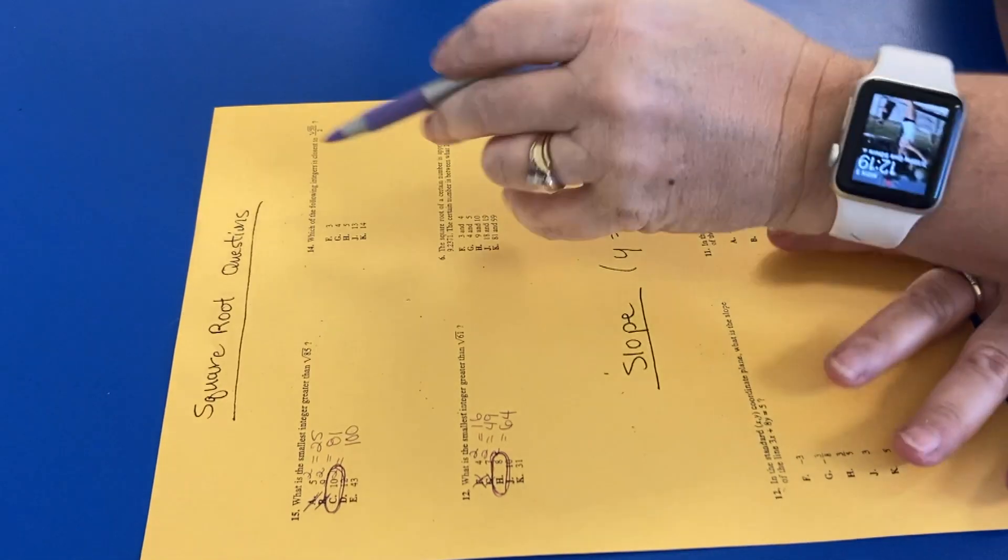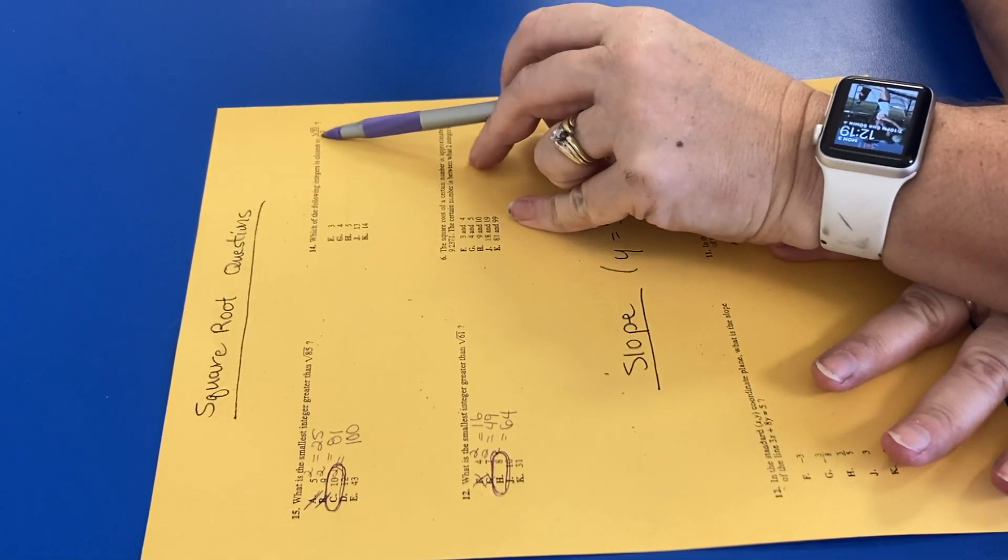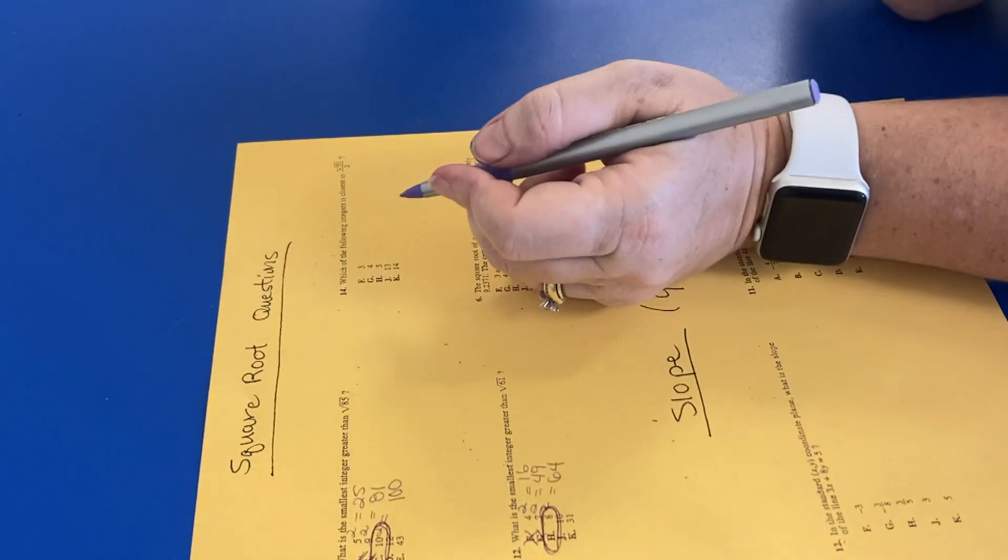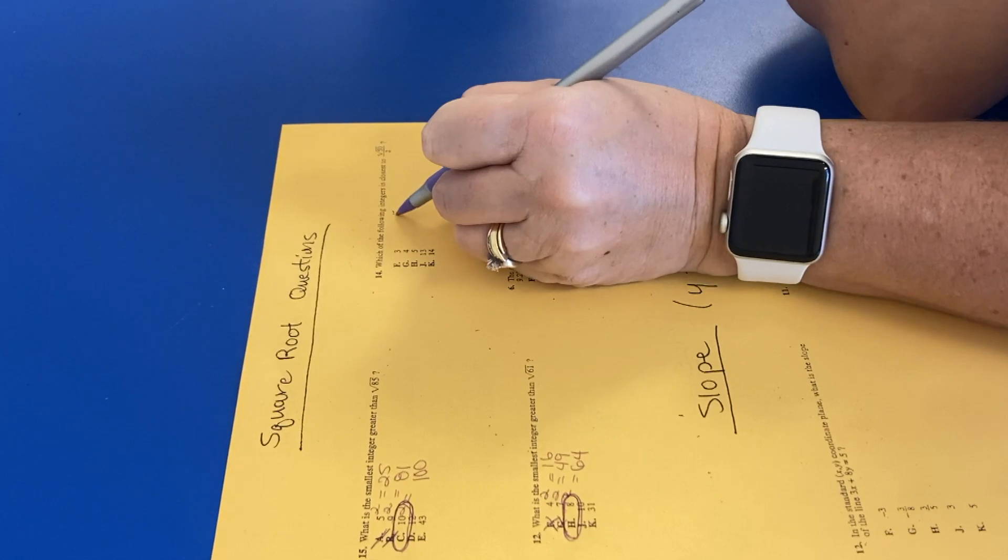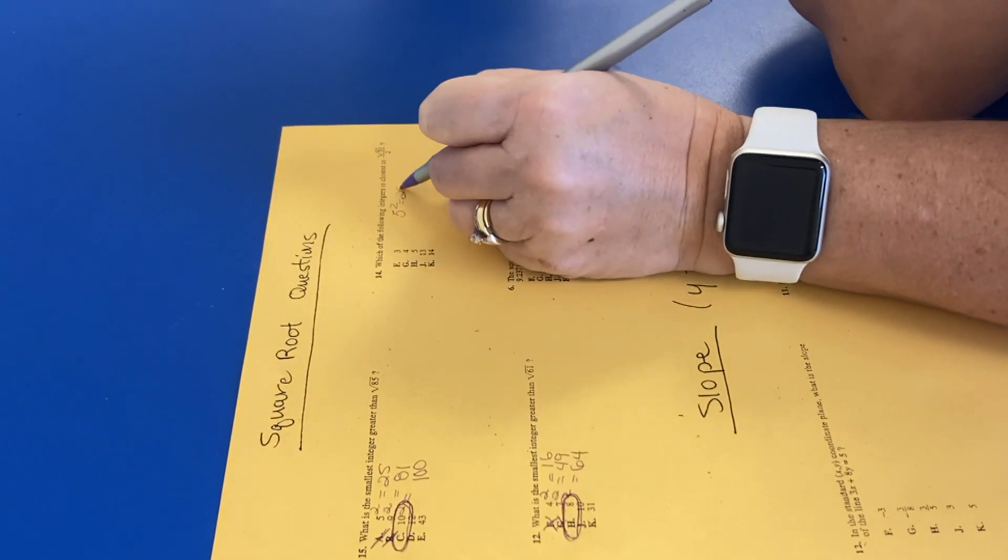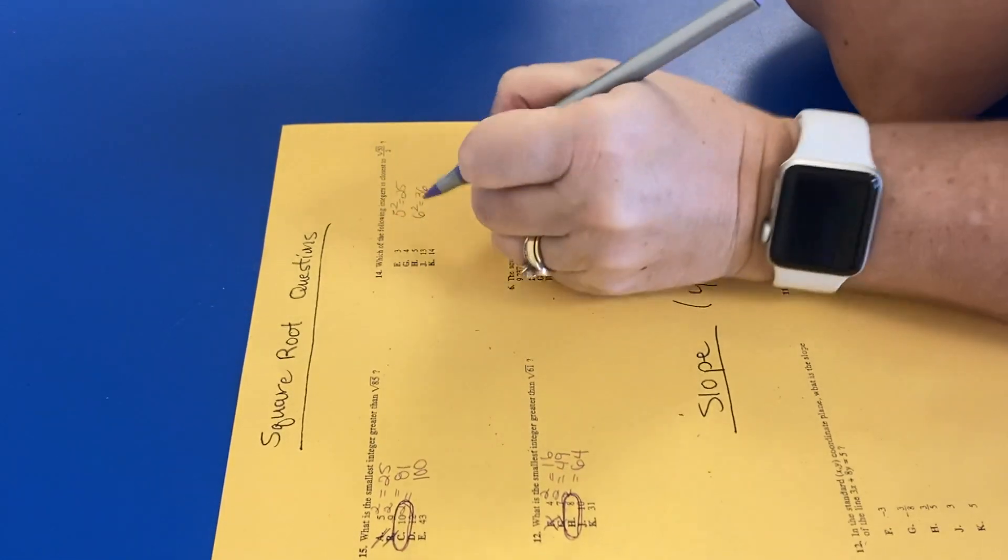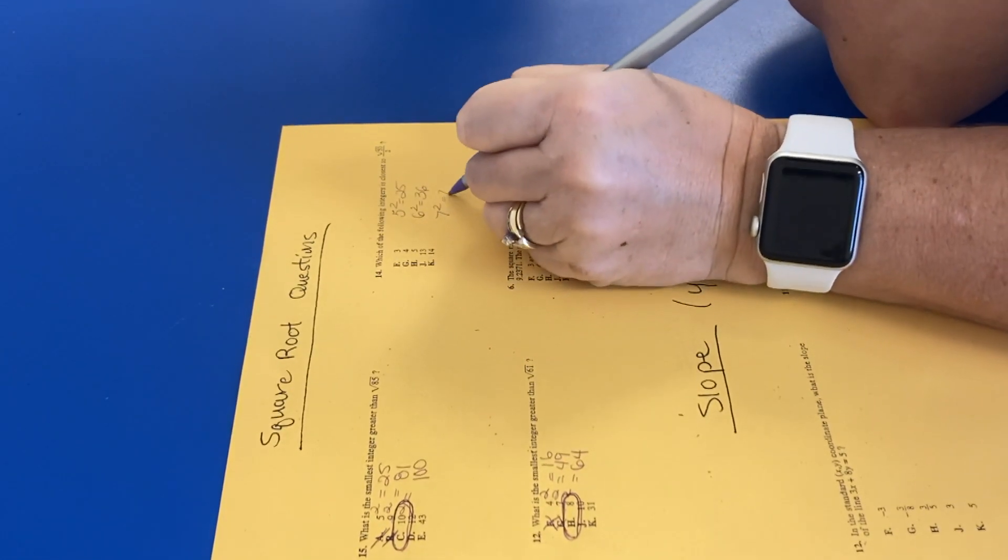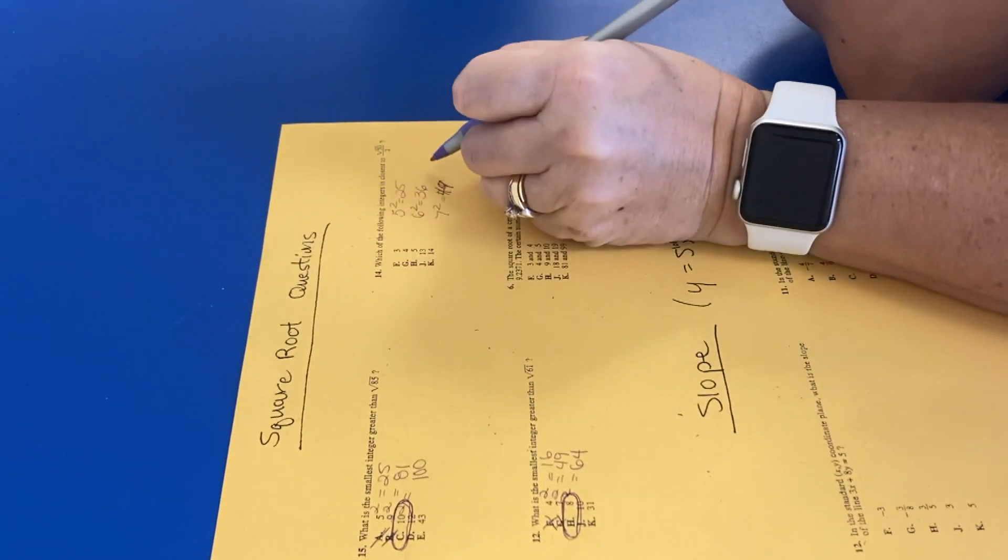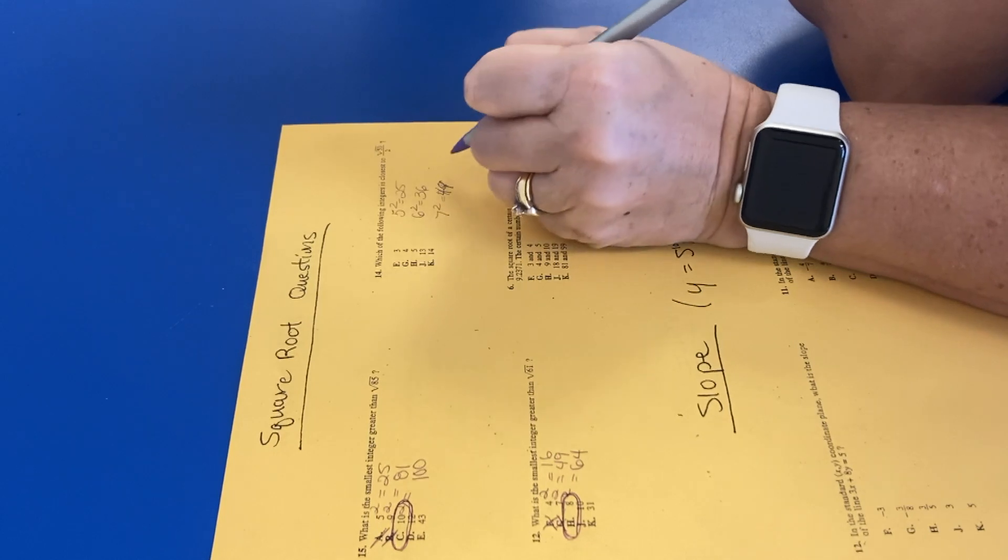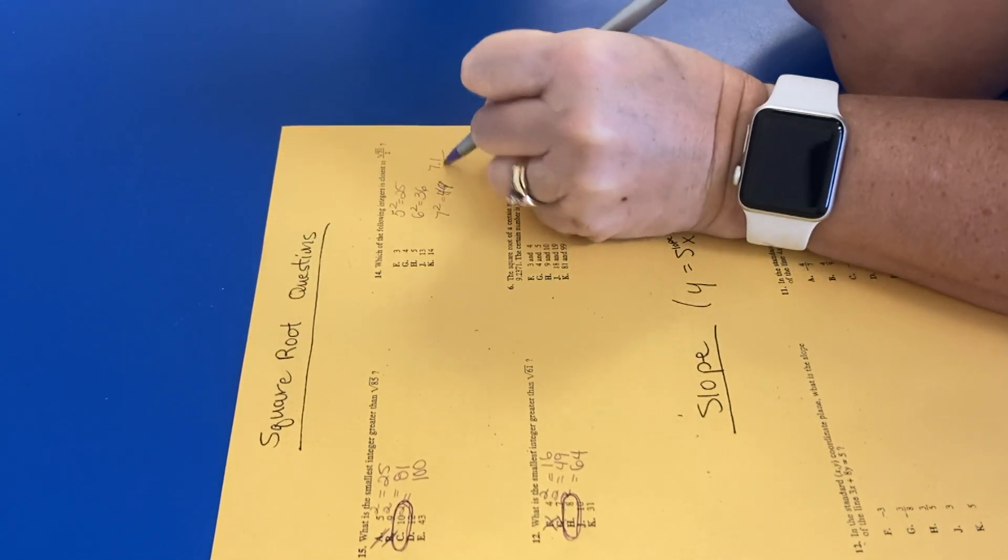Okay, so now this is a little different. Which of the following integers is closest to square root of 50? What is closest to square root of 50? Let's start with 5. 5 squared is 25. That's not high enough. 6 squared is 36. That's not high enough. 7 squared is 49. Okay, so that's pretty close to square root 50, right?